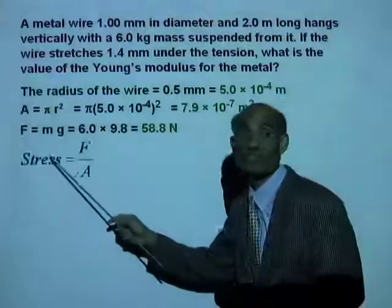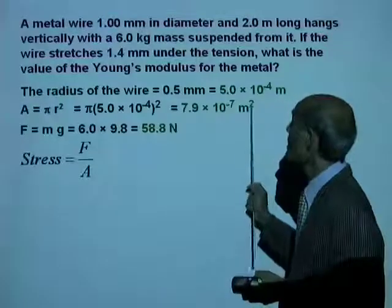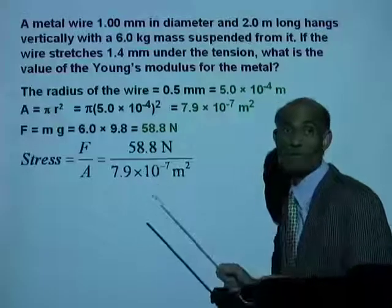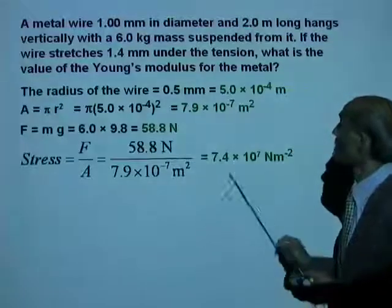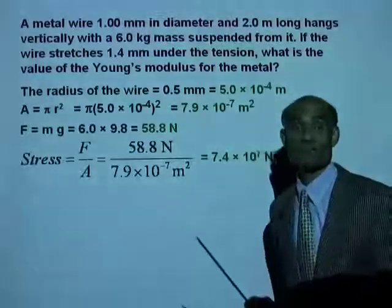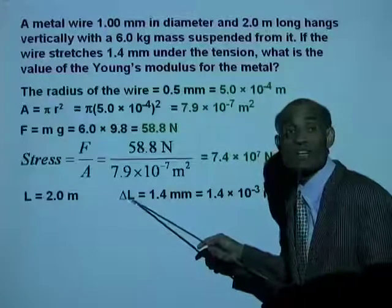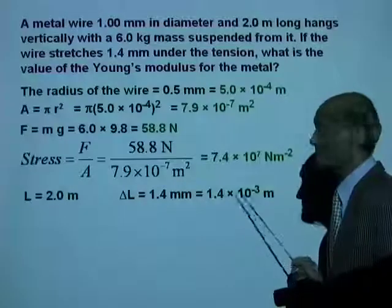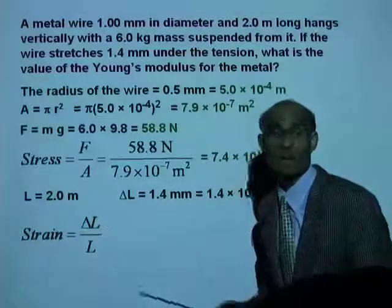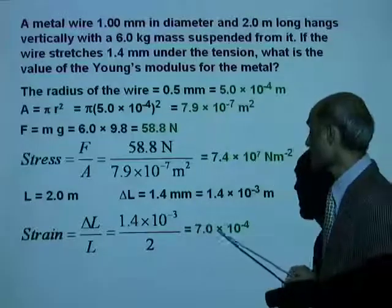Therefore, the stress is force divided by area: 58.8 newtons acting on an area of 7.9 times 10 to the negative 7 meters squared. Dividing gives a stress of 7.4 times 10 to the 7 newtons per square meter. Now for the strain: the original length is 2 meters and the increase in length is 1.4 millimeters, which is 1.4 times 10 to the negative 3 meters. Therefore, the strain is delta L divided by L: 1.4 times 10 to the negative 3 divided by 2, giving 7 times 10 to the negative 4.